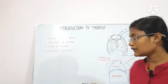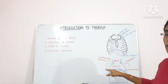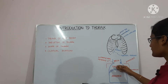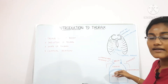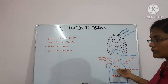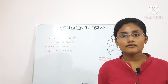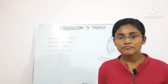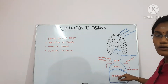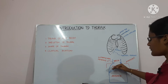The upper part of the thorax is continuous with the root of the neck and is partially separated from it by the suprapleural membrane, or Sibson's membrane. The lower part of the thorax is nearly completely separated from the abdomen by the diaphragm, which is concave downwards. The thorax usually appears large due to the shoulders, but the actual thoracic cavity is smaller because the diaphragm's concavity allows the abdomen to occupy much of that apparent space.